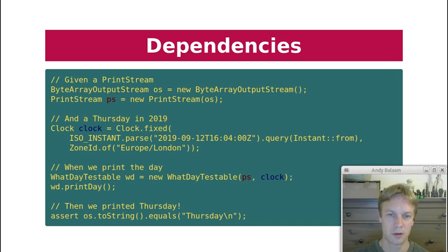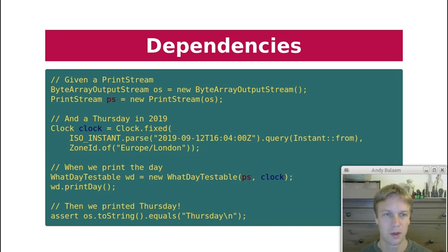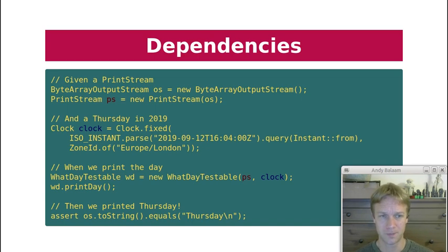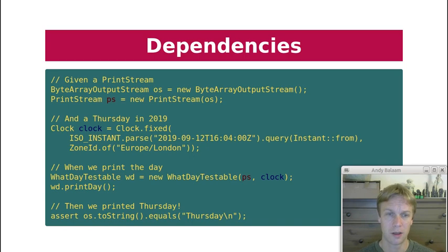If we'd used the original class, we wouldn't have been able to test that the PrintStream ended up with 'Thursday' in it, because depending on the day the test ran it would have produced a different day of the week, since it was using instant.now. And it would print straight to the console, which is no use. So the two dependencies identified — instant.now and system.out — have been replaced with things that can be passed in. In our unit test we pass in a PrintStream based on a ByteArrayOutputStream instead of system.out. System.out is actually an instance of PrintStream, so the code inside WhatDayTestable looks similar to the original.